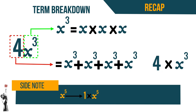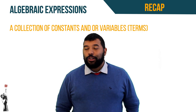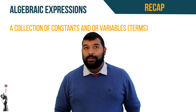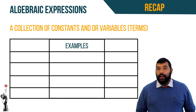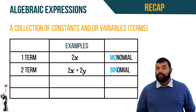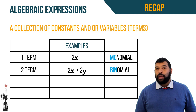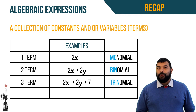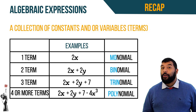If we have a variable, for example a, with no exponent, it means the exponent is 1. We also recap that algebraic expressions are a collection of constants and/or variables — in other words, terms. If we have one term the expression is a monomial, two terms a binomial, three terms a trinomial, and four or more terms a polynomial.